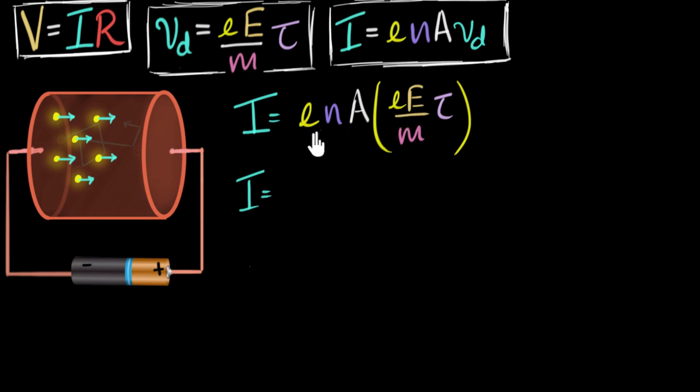We can go ahead and simplify that now. That'll give me, let me write this N here, then I get an E squared, then I have my A, then I have A, I have my tau divided by M, times the electric field.